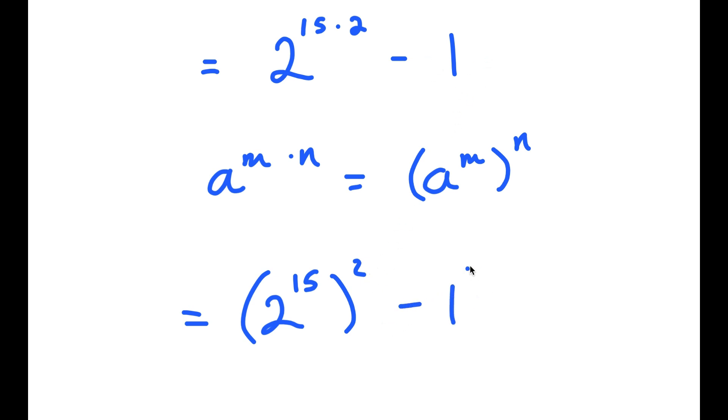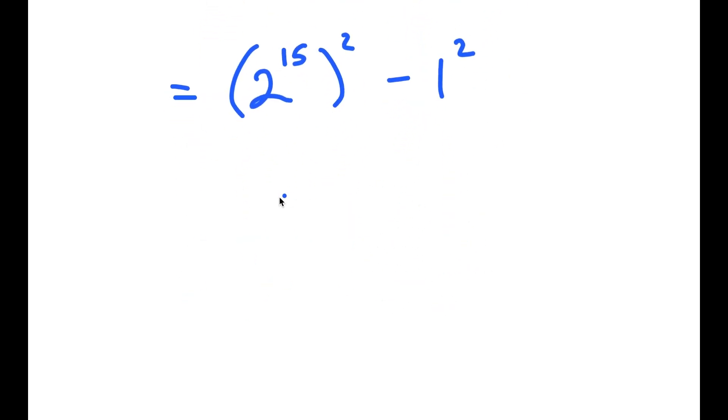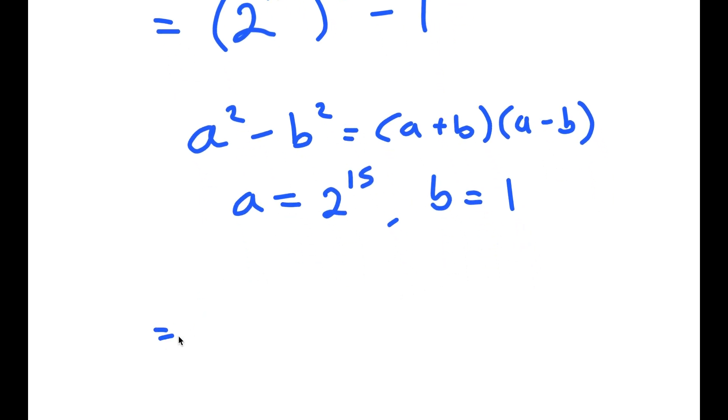And negative 1 is the same thing as negative 1 squared. Now, if I have something of the form a squared minus b squared, this is equal to a plus b times a minus b. So in this case, a is 2 to the power of 15 and b is 1. So now I have 2 to the power of 15 plus 1 times 2 to the power of 15 minus 1.